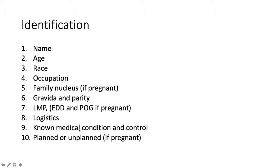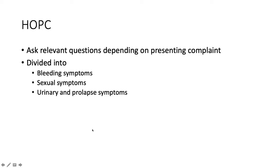No medical condition and control: do you have diabetes or hypertension and how is your control? This applies more to obstetrics as well. If she is pregnant, you also ask whether the pregnancy was planned or unplanned — this gauges the level of support. If it was planned, it is more likely she has more family support, social support and financial support.